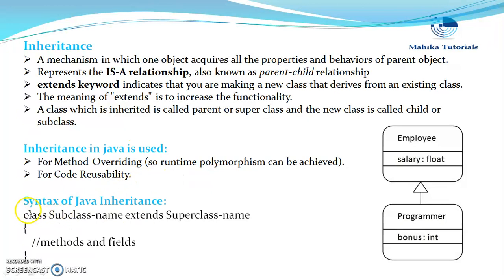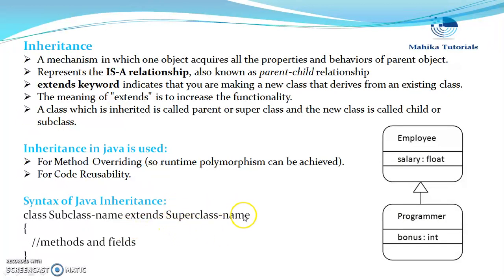The syntax of Java inheritance is: we write the class keyword, then the class name we are creating, then the extends keyword, and then we specify the super class name. For example: class Programmer extends Employee, and then we give the body of the subclass.